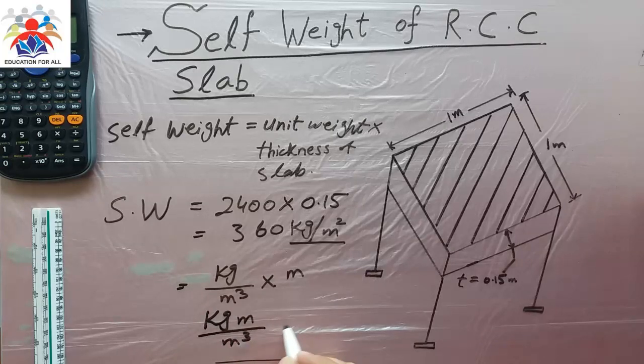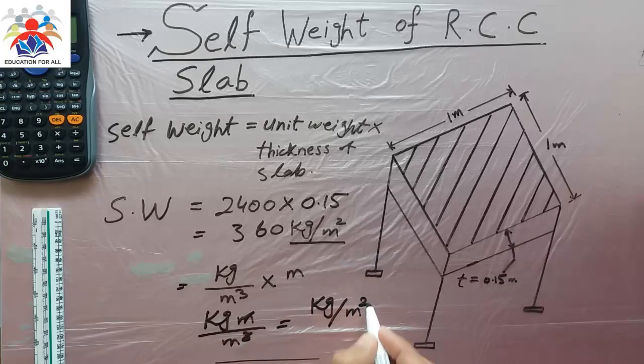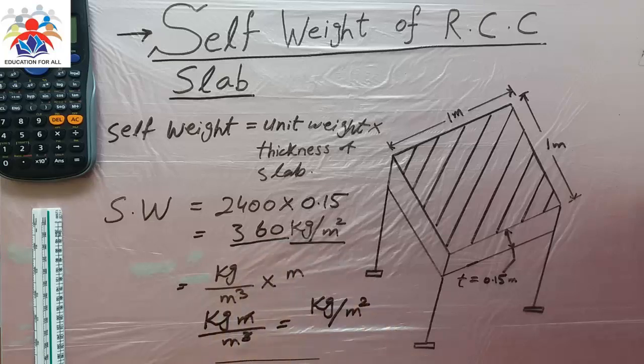So 360 kilograms per square meter is our final answer. This is the self-weight of our RCC slab. That's it for today. Thank you for watching my video. Please don't forget to subscribe to my channel.